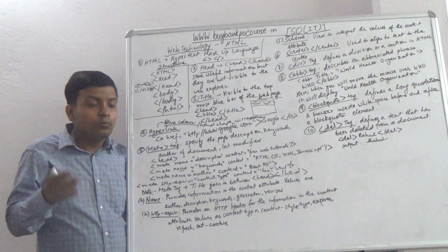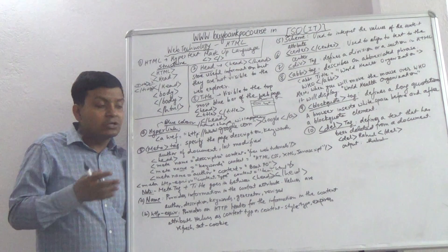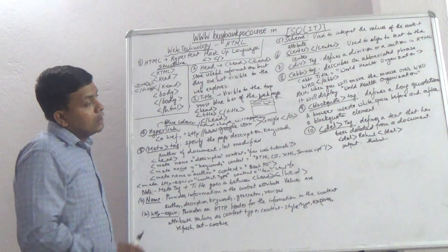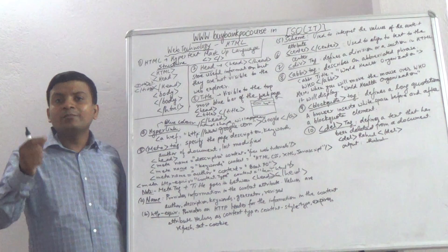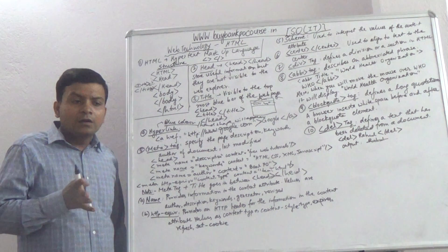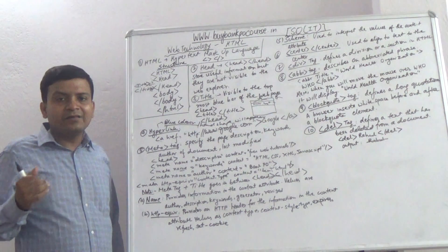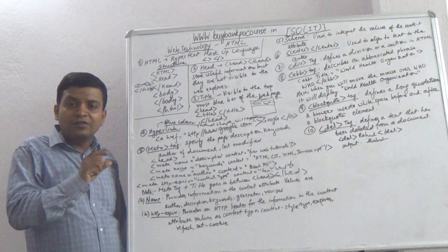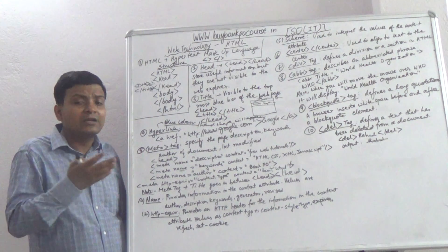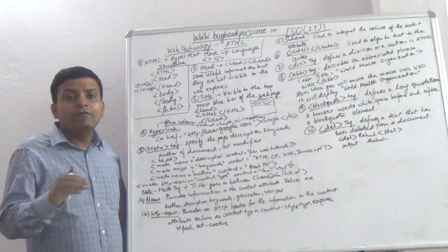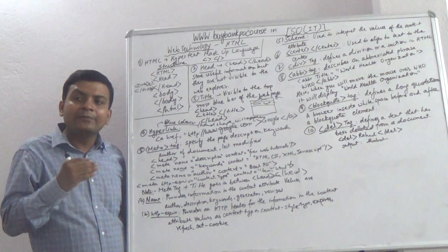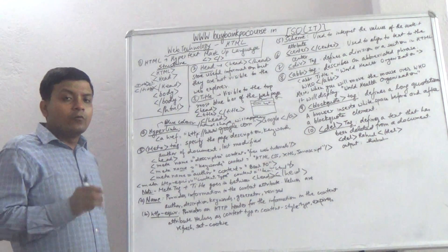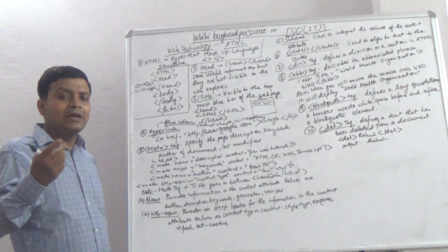Please take out your notebook and write down all the stuff that I am writing on the board, because it will help you a lot in your preparation. After that, there is one tag known as BLOCKQUOTE. BLOCKQUOTE is used to write a long paragraph. If you have three or four paragraphs in a website and you want to differentiate between them, BLOCKQUOTE will put a white line above the starting point of your paragraph and another white line at the ending point.